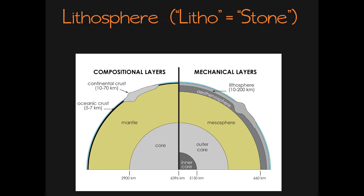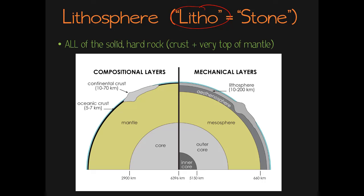The top layer is called the lithosphere, and the word litho means stone. So the lithosphere contains all of the really hard rock. If you look here on this side at the compositional layers, here's our crust. Over on the other side, what are called the mechanical layers, the lithosphere is this section here. So if you pull it over to the other side, you'll see that the lithosphere contains the crust but it also contains part of the mantle, because the very upper part of the mantle is still cool enough to remain solid hard rock. So it's considered part of the lithosphere — the lithosphere is any part of the rock that's hard.